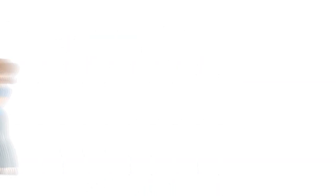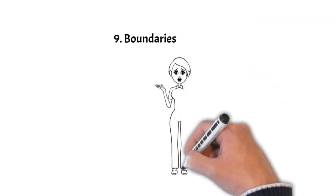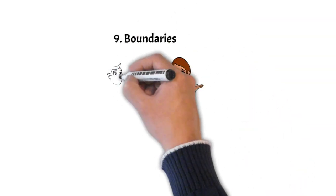Number nine, difficulty with boundaries. They might struggle to set or respect boundaries, often overstepping or allowing others to overstep theirs.